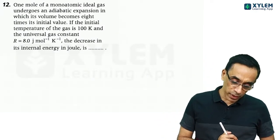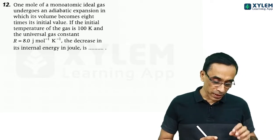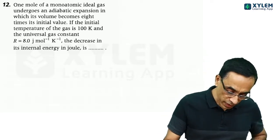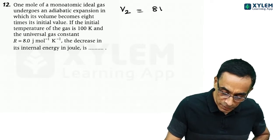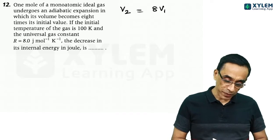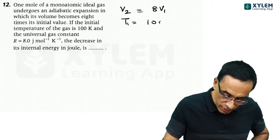One mole of a monoatomic ideal gas undergoes adiabatic expansion in which its volume becomes eight times its initial volume. Volume V2 is eight times initial volume V1. The initial temperature T1 is given as 100K.